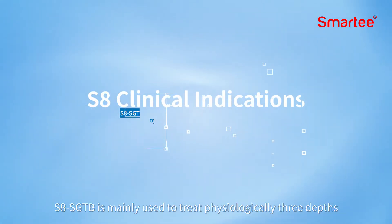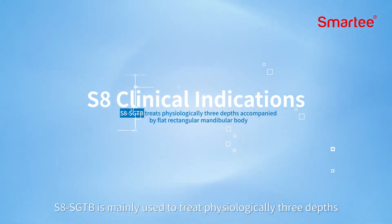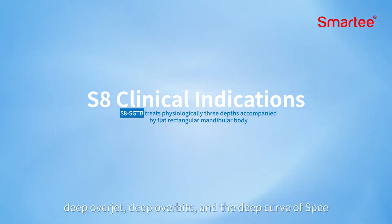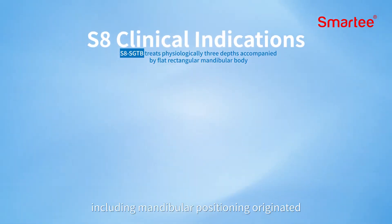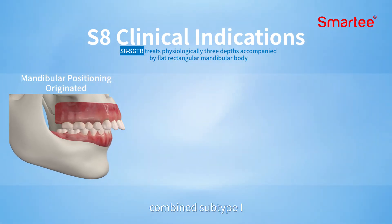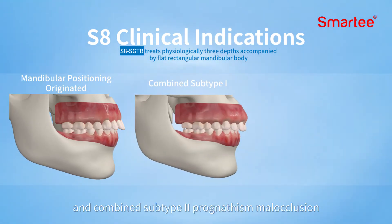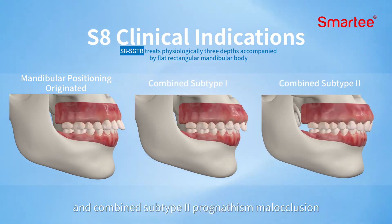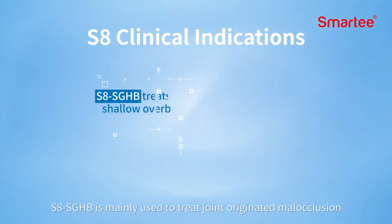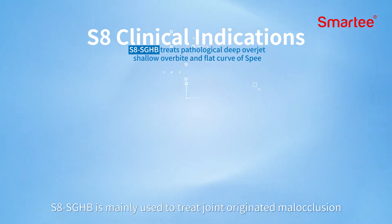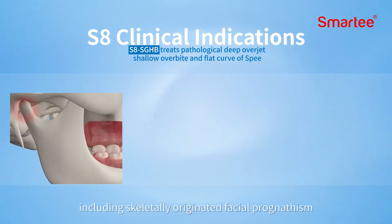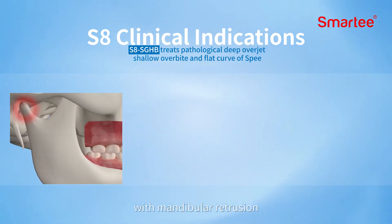In terms of indications, S8 SGTB is mainly used to treat physiologically three-depth prognathism: deep overjet, deep overbite, and a deep curve of Spee, accompanied by flat and horizontally rectangular mandibular body, including mandibular positioning-originated combined subtype 1 and combined subtype 2 prognathism malocclusion.